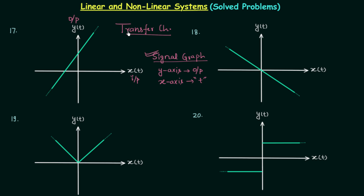If you compare transfer characteristics with signal graphs, you will find that in place of time we have input. Using this, we will try to comment about the linearity of the system. In problem number 17, we have a straight line, so we will first try to obtain its equation.